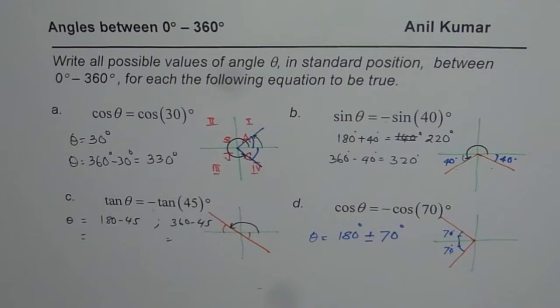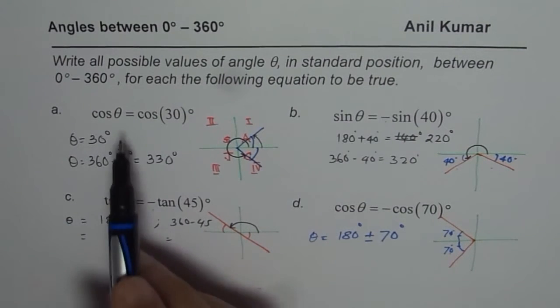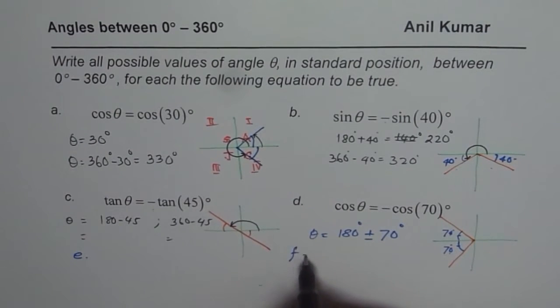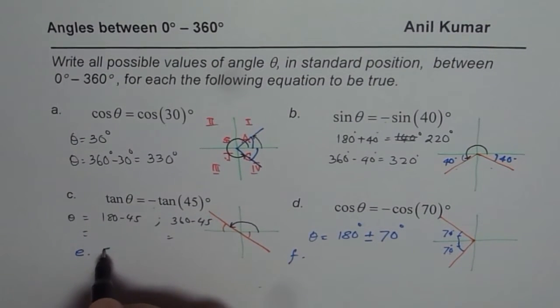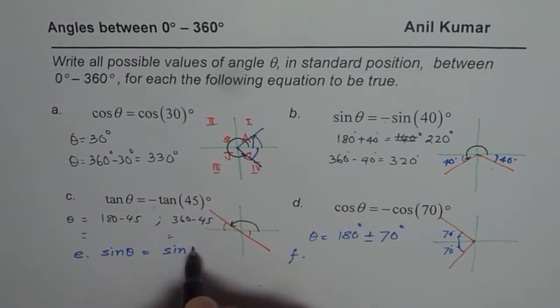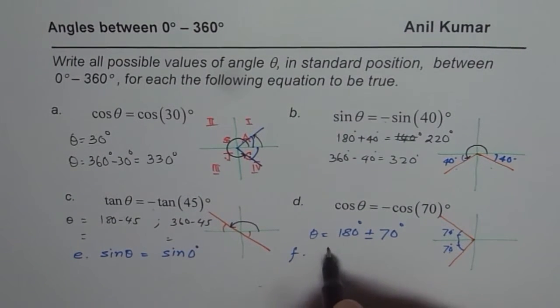So, most of the time, you should get two values for theta, since we know that cosine, sine, tan are positive in two coordinates. Now, as an exercise, what you can do is, I am kind of giving you a test question here, leaving the space here for those test questions.